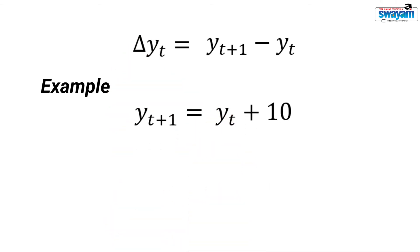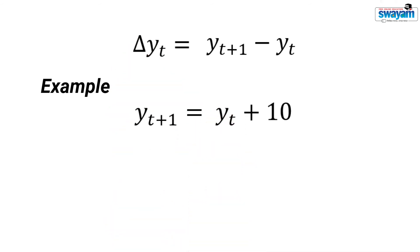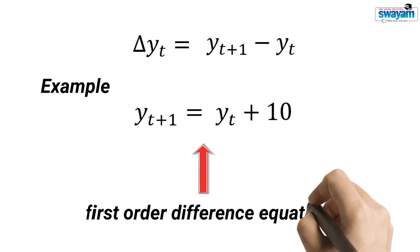Consider this example. This equation is a difference equation and since it involves a time gap of one time period, it is called a first order difference equation. Note that the symbol delta is not used.